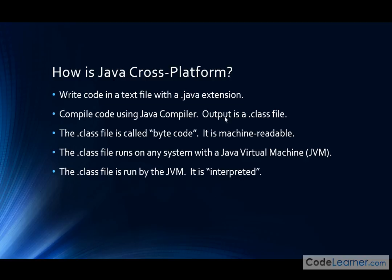So the whole process goes like this: you type your code into a .java file, you compile it using a compiler, the output you get is a .class file — this is the actual program. But you have to have a Java virtual machine in order to run Java programs. The Java virtual machine looks at the class file line by line and executes the binary code in the class file. When we say it's interpreted, that's all we're saying — the virtual machine goes line by line, looks at the instructions, and executes the output.